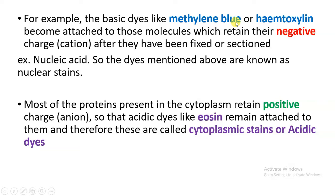Let's take another example. If the cytoplasm is having a positive charge, then we need to dye it with eosin. Eosin is an acidic dye, also called a cytoplasmic stain.